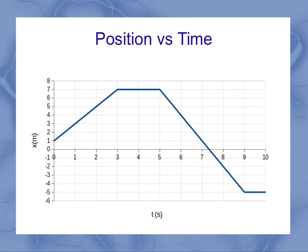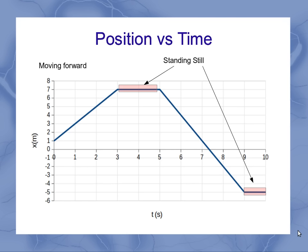What else can we learn from our position versus time graph? Anytime you have one of these horizontal sections, that means you're standing still — you've got a constant position, or your velocity is zero. If we're moving forward, we're going to have a positive slope, which is a positive velocity. Negative slopes mean negative velocities, meaning we're moving backwards.